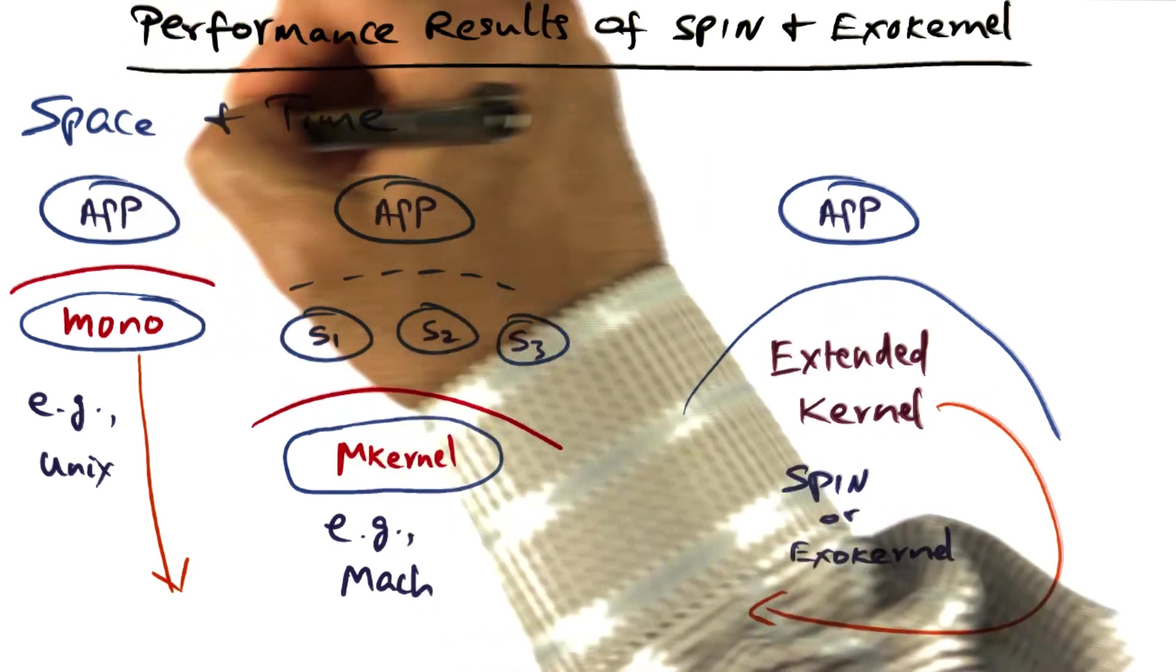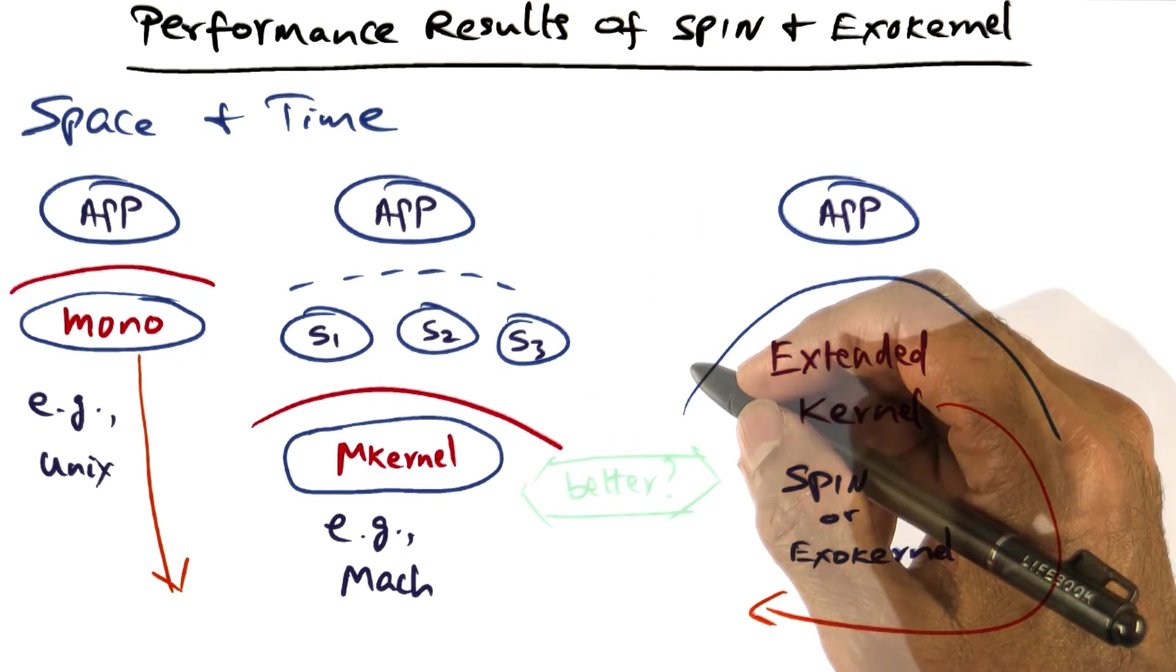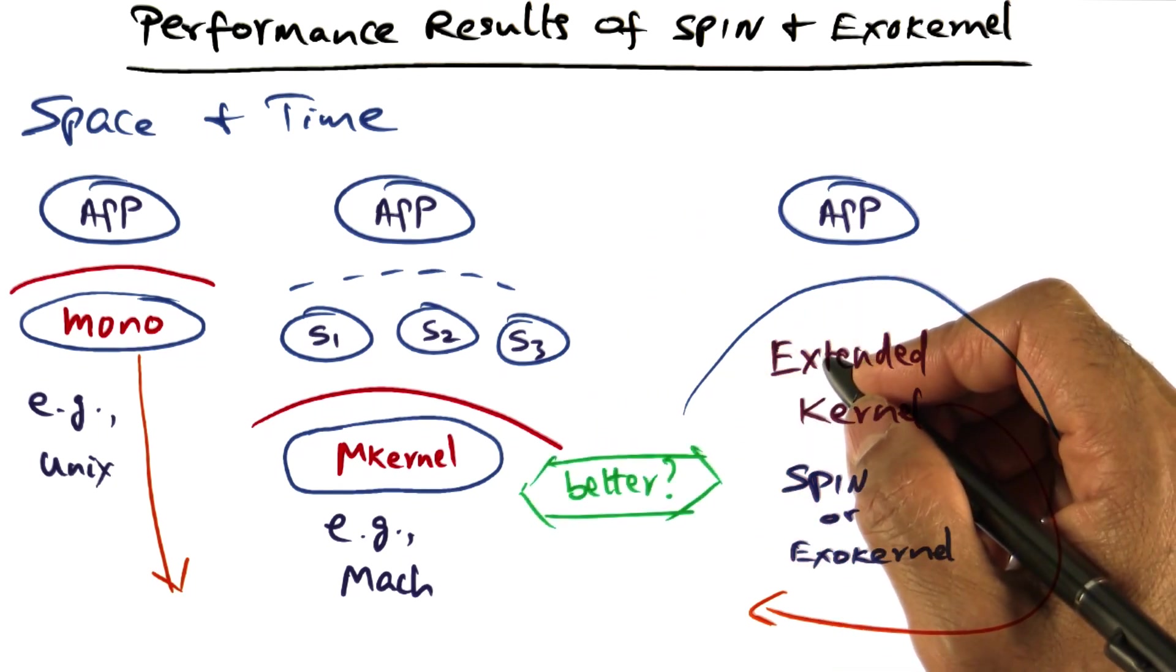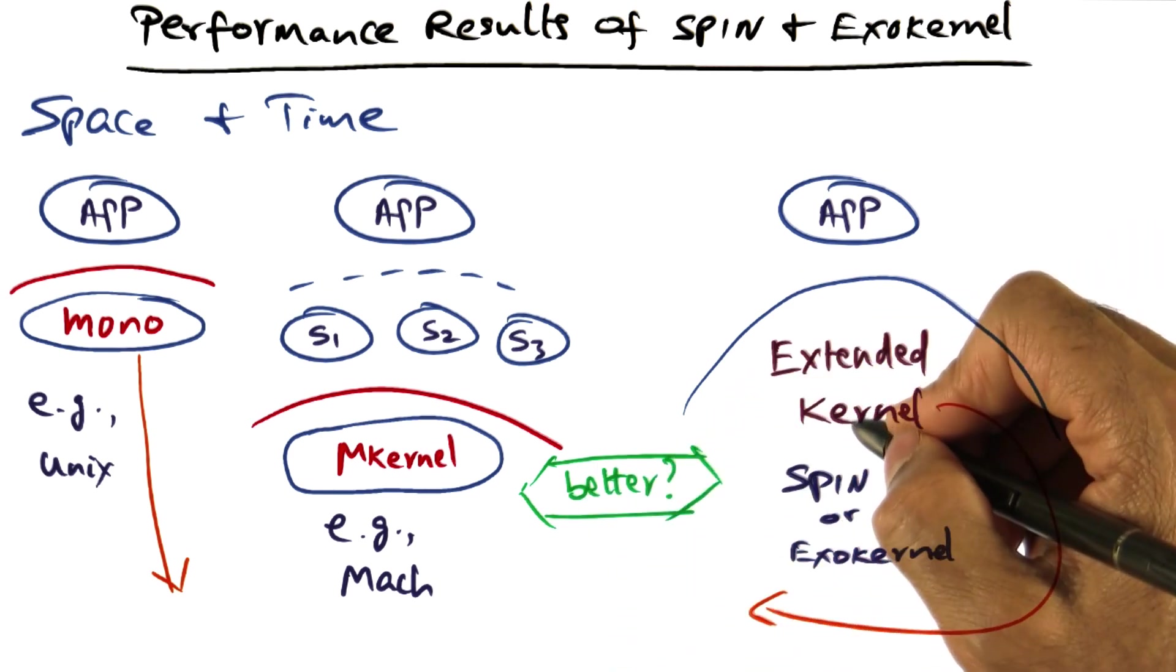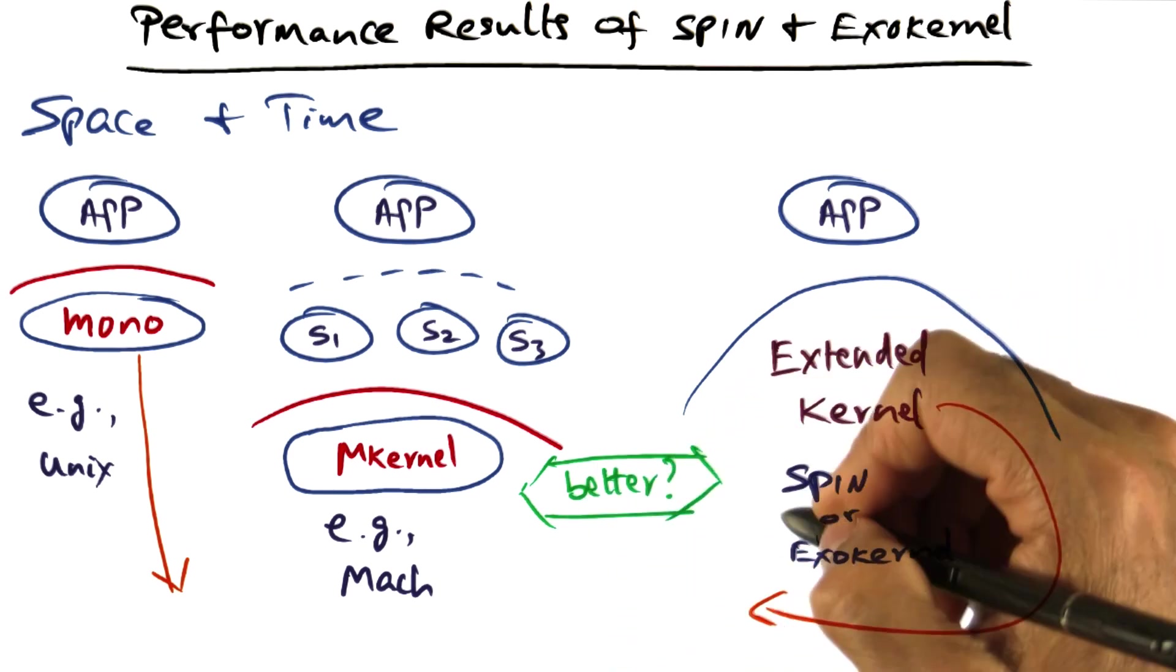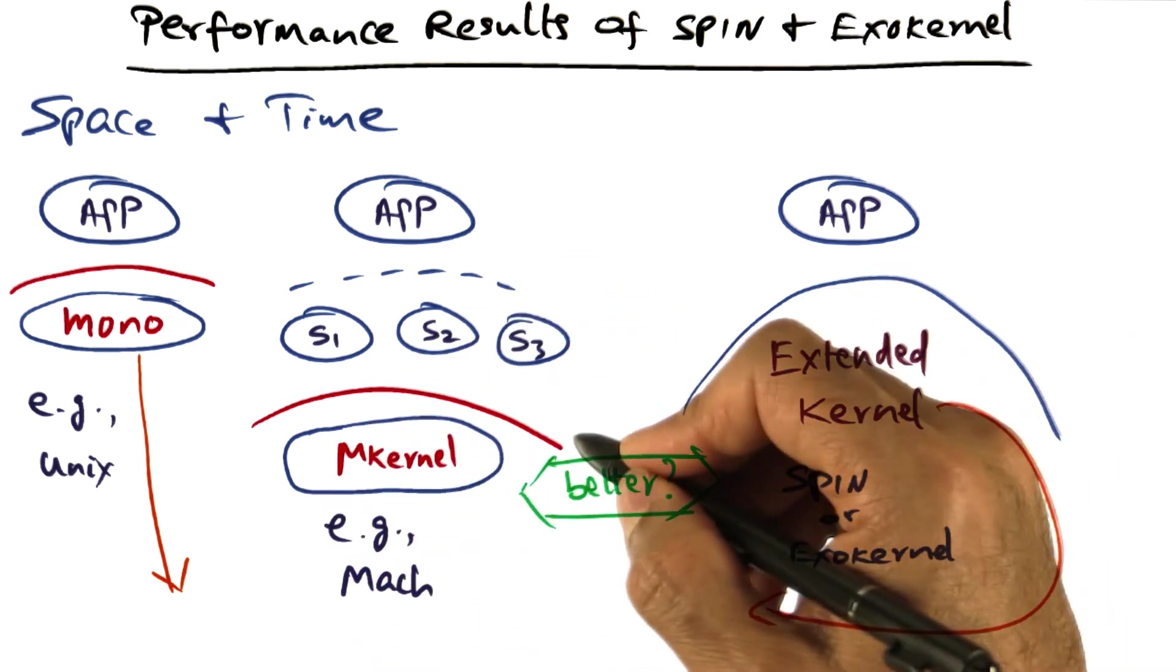And the performance questions always center around space and time. For example, how much better time wise is the extended kernel, whether it is a spin approach or the exokernel approach, compared to a microkernel based approach in terms of performance.